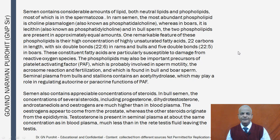These constituent fatty acids are particularly susceptible to damage from reactive oxygen species. The phospholipids may also be important precursors of platelet activating factor, which is probably involved in sperm motility, the acrosome reaction, and fertilization, found in bull and boar sperm. Seminal plasma from bulls and stallions contains an acetyl hydrolase which may play a role in regulating autocrine or paracrine functions. Semen also contains appreciable concentrations of steroids; in bull semen, progesterone, dihydrotestosterone, androstenediols, and estrogens are much higher than in blood plasma.